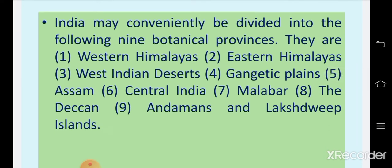India may conveniently be divided into the following nine botanical provinces: western Himalayas, eastern Himalayas, west Indian deserts, Gangetic plains, Assam, central India, Malabar region, the Deccan region, and Andamans and Lakshadweep Islands. These are the nine different botanical regions, also called botanical zones.